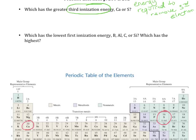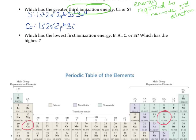We can go ahead and write electron configurations for them. For sulfur, it's going to be 1s2, 2s2, 2p6, 3s2, 3p4. For calcium, we've got 1s2, 2s2, 2p6, 3s2, 3p6, ending with 4s2.